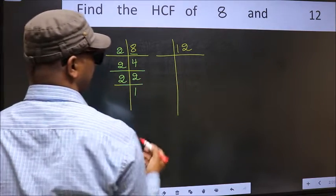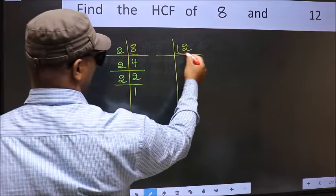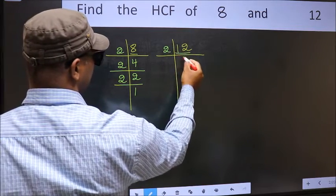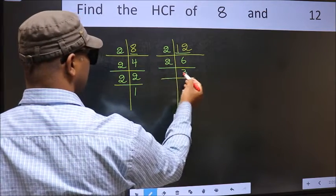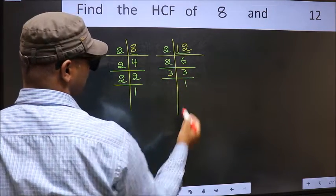Now the other number, 12. 12 is 2 times 6 equals 12. 6 is 2 times 3 equals 6. Now 3 is a prime number, so 3 times 1 equals 3.